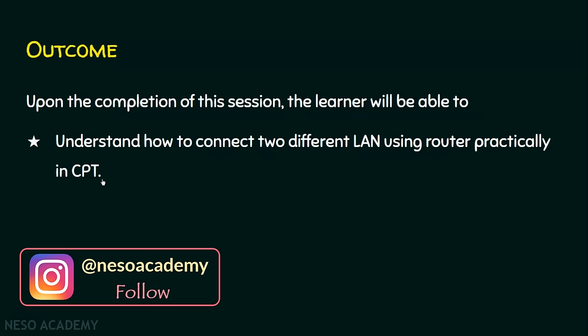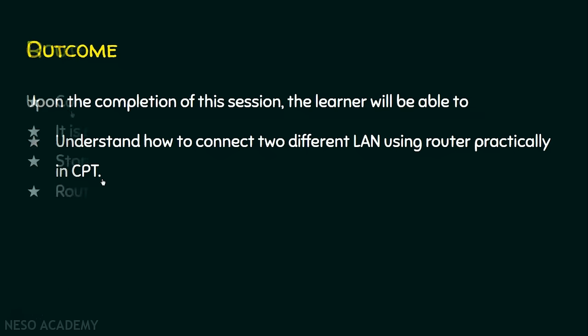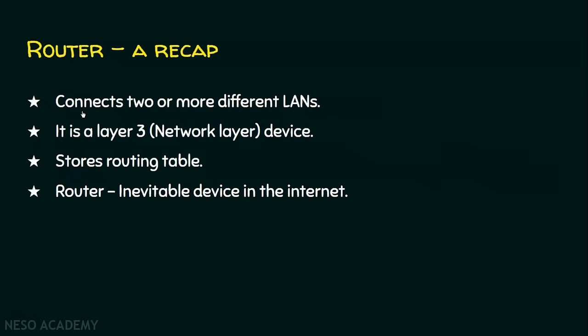We will have a recap on routers. A router is a device that connects two or more different local area networks. It is a layer three device that operates in the network layer. It has memory and stores a routing table in its memory. Routers are an inevitable device in the internet, because the internet is a collection of enormous networks with different IP schemes and different protocols.